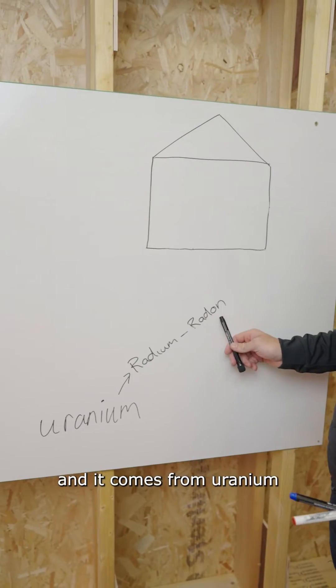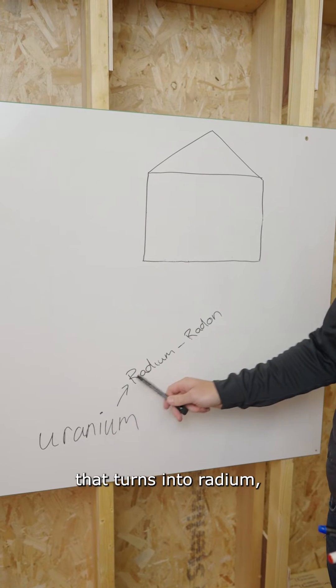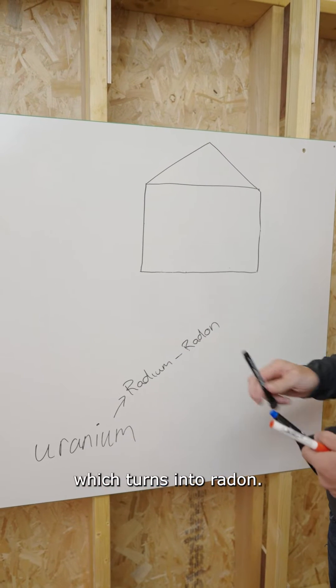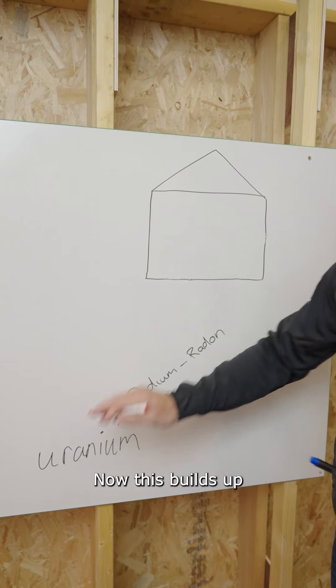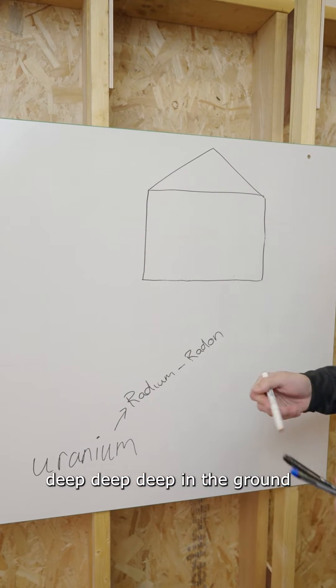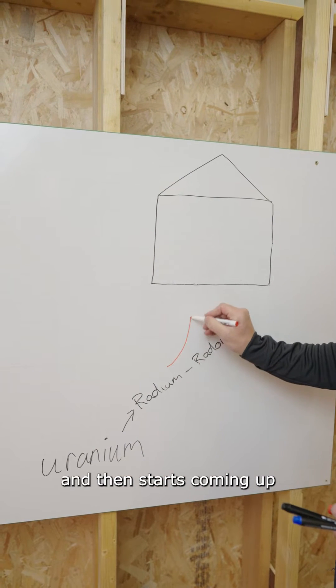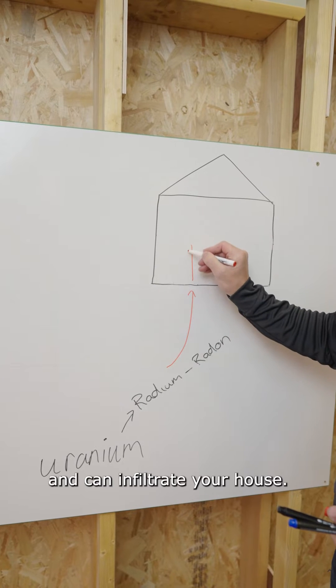So it's a naturally forming gas and it comes from uranium that turns into radium which turns into radon. Now this builds up deep in the ground and then starts coming up and can infiltrate your house.